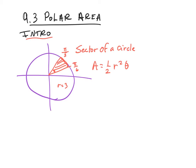Say for instance I go from pi over 6 to pi over 3. Then the interior angle theta is going to be pi over 6. So if I want to find the area, this would be one-half r squared — my r is 3 — and my theta would be pi over 6. That's the interior angle. So I get 3 over 4 pi unit squared. That would be my area.